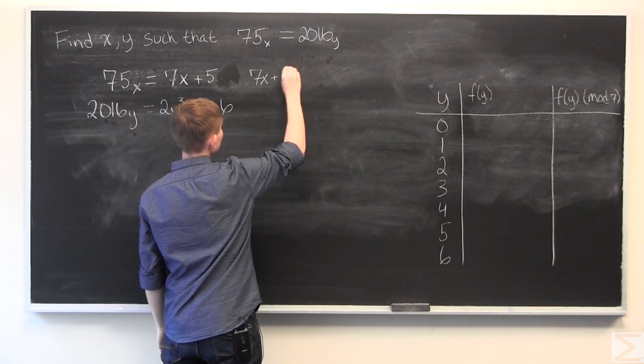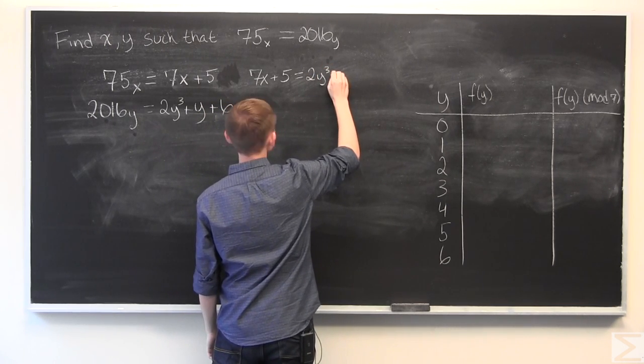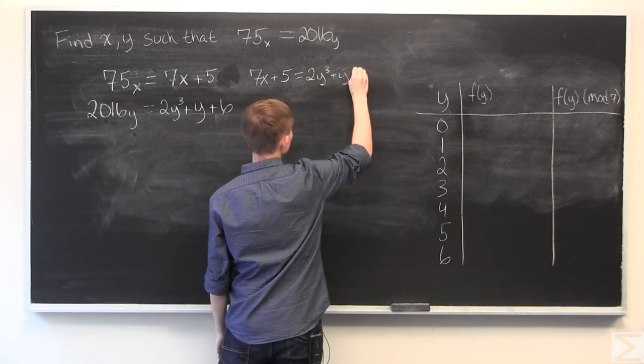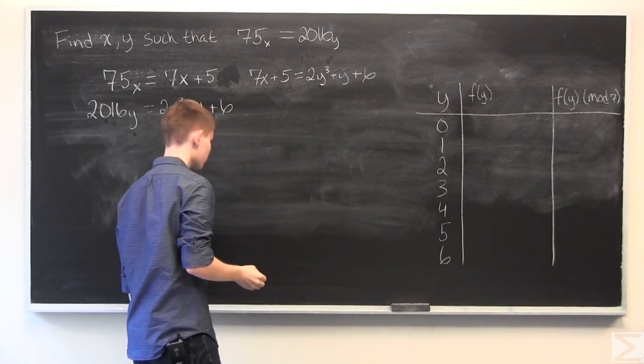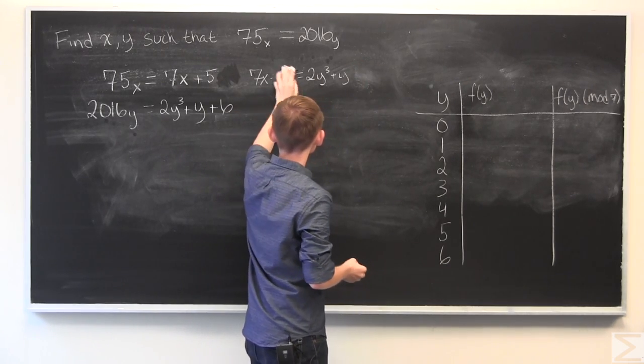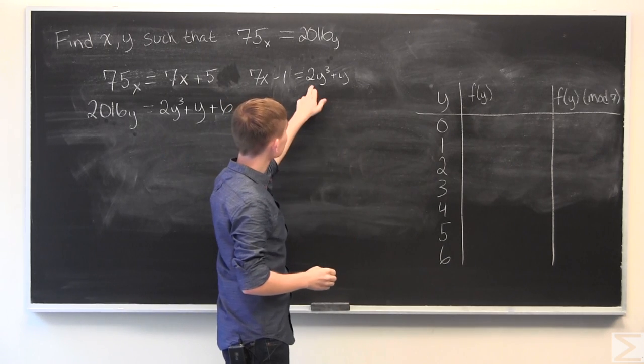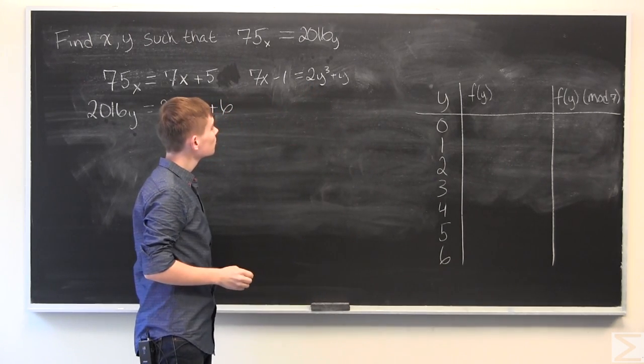So, 7x plus 5 is equal to 2y cubed plus y plus 6 and we can just subtract 6 from both sides and we get 7x minus 1 is equal to 2y cubed plus y.